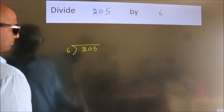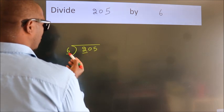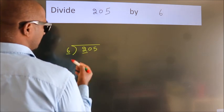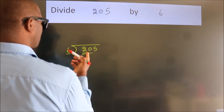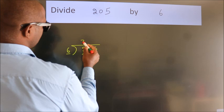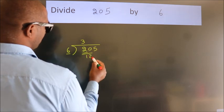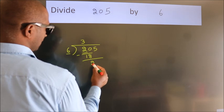Next. Here we have 2. Here 6. 2 is smaller than 6, so we should take 2 numbers: 20. A number close to 20 in the 6 table is 6 threes, 18. Now we should subtract. We get 2.